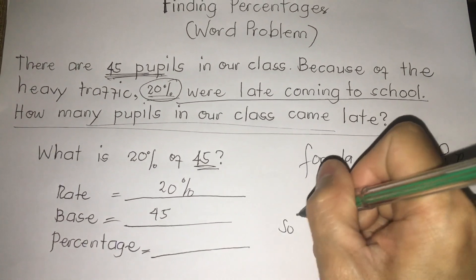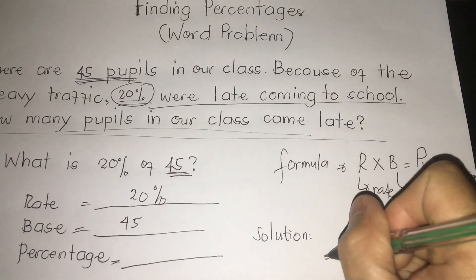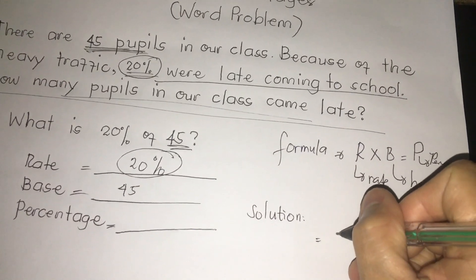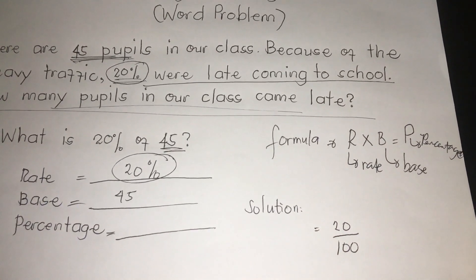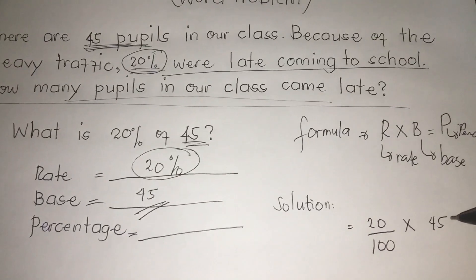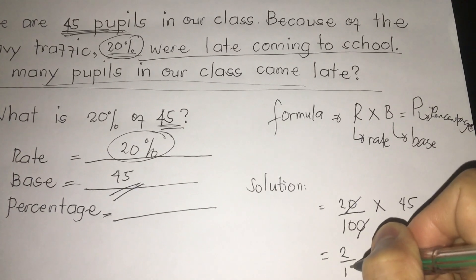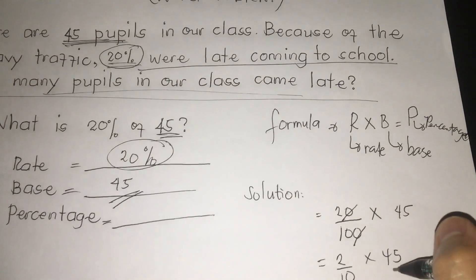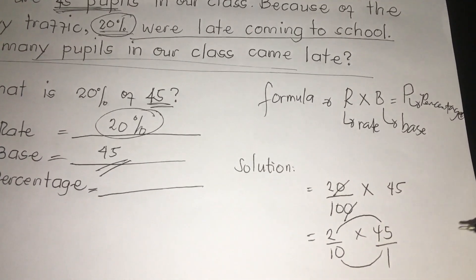Now we are going to solve: rate times base, because we are going to find out the percentage. We are going to write here: Solution. So we have an equals sign. I'm going to convert first 20% to fractional form. So we're going to write 20 over 100, because this is the fractional part of 20%, times 45, the base. Now cancellation of zeros. So we're going to write 2 over 10 times 45. Then we're going to write the reciprocal of 45, which is 1.